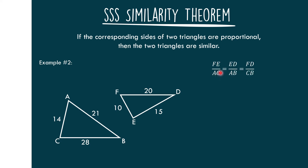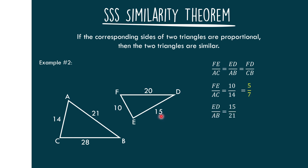Let us check whether the ratios are equal. FE over AC equals 10 over 14; simplifying by dividing both numerator and denominator by 2, we get 5 over 7. ED over AD equals 15 over 21; dividing both by 3, we also get 5 over 7.